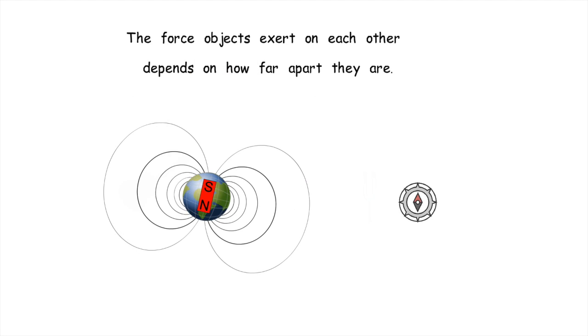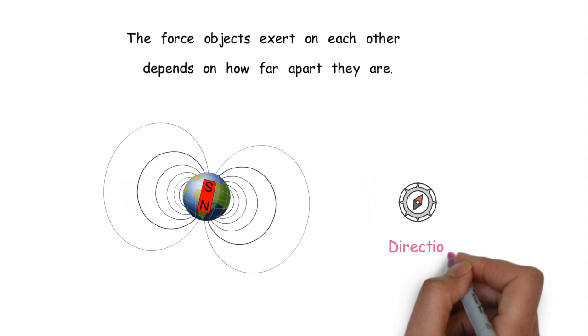The Earth's magnetic field exerts a force on a compass causing it to align in a north-south direction. Hence the compass can be used to show direction.